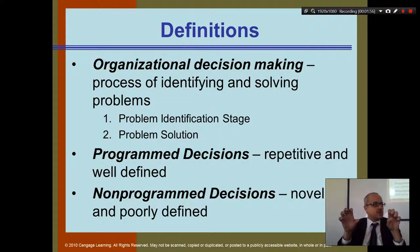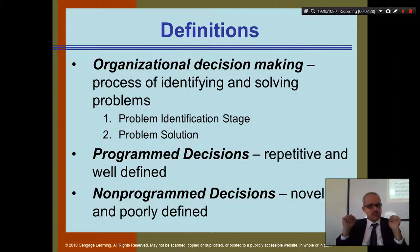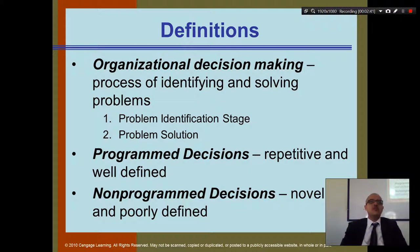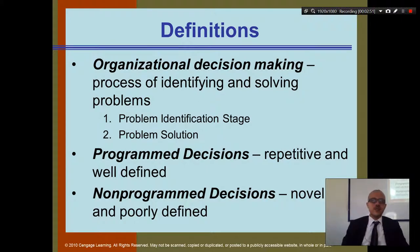Some companies have programmed decisions — preset rules already established. For example, if you are absent 25% of the time, you are automatically withdrawn. That's a decision made by the whole organization. There are also non-programmed decisions, which are novel and poorly defined — not already preset, no rules. These can be emergency situations, like a war, or a competitor dropping their prices, where the company must decide how to respond.